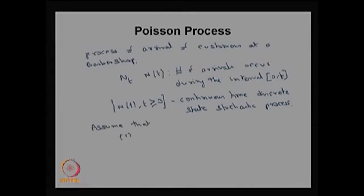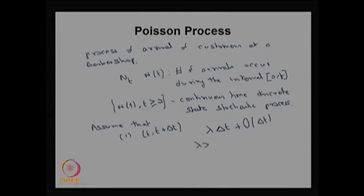The first assumption: in a small negligible interval t to t plus δt, the probability of one arrival is going to be λδt + O(δt). Here λ is strictly greater than 0. The capital O(δt) means that as δt tends to 0, the order of δt tends to 0. So this is the first assumption.